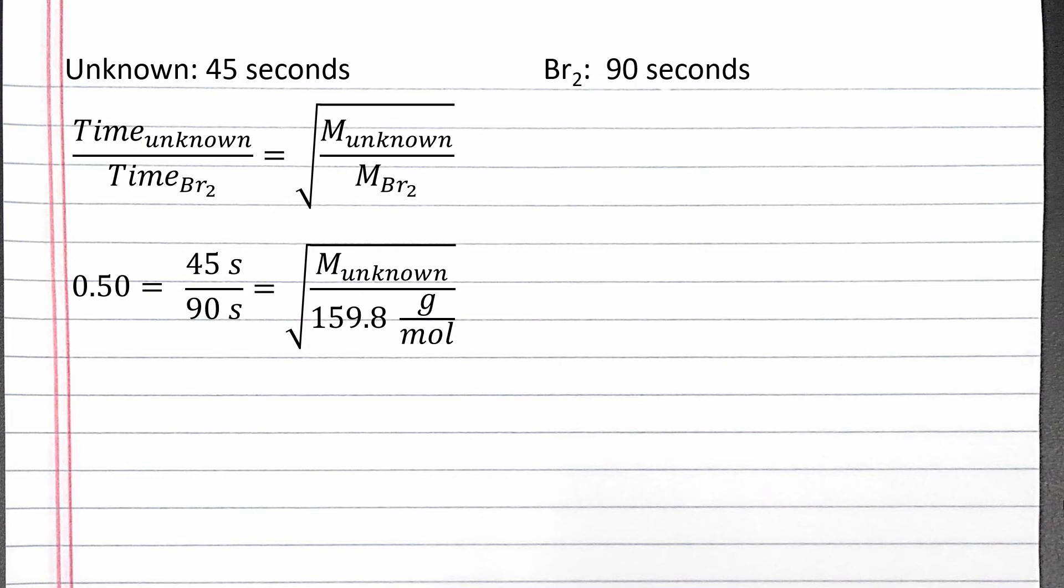45 seconds divided by 90 seconds is the unitless number 0.50. To get rid of the square root on the right side of the equation, we can square both sides. If we square 0.50, we will get 0.25.